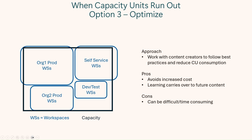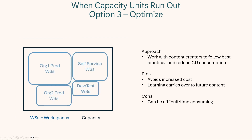The third option — and this is the one I definitely recommend you try first — is to optimize. The capacity stays the same size and you reduce the size of all the workloads, so there's no increase in cost. The challenge is it can be hard and time-consuming to fix those items and better leverage best practices. Hopefully as you go through that exercise, the content creators you're working with carry that learning forward for the next content they create.